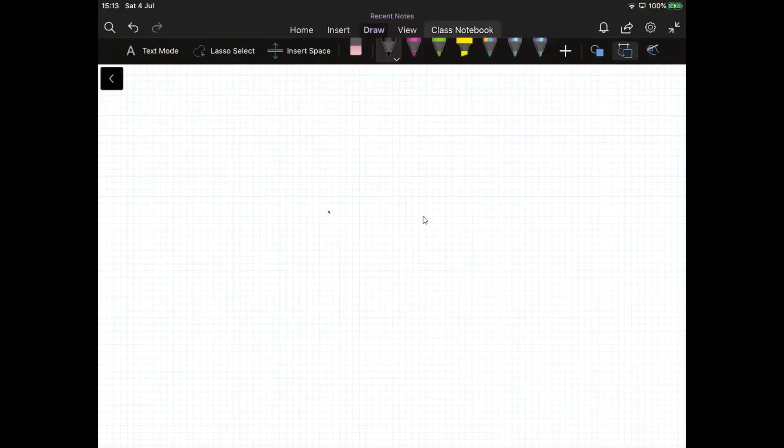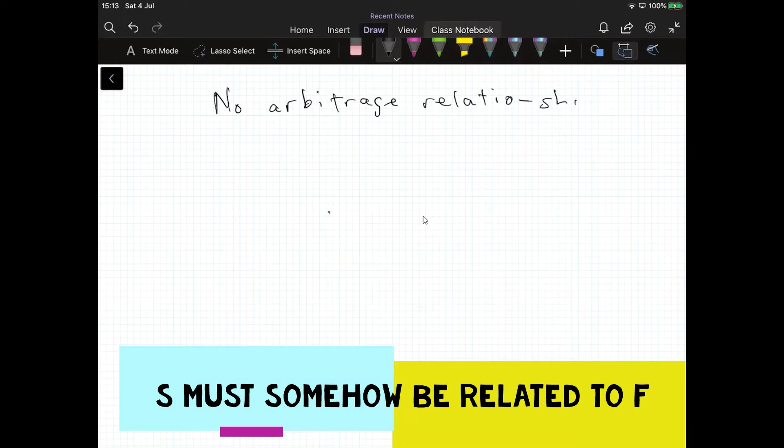In this video we're going to take a look at what we might describe as the no-arbitrage relationship between forward price, forward or futures, futures price and the spot price.